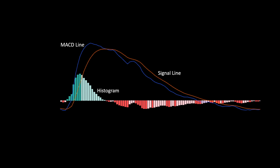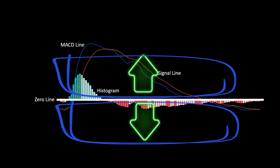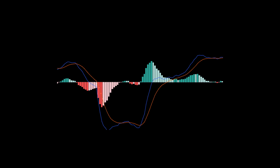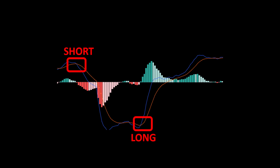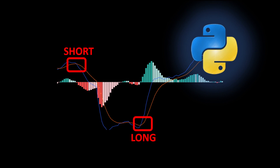The histogram is the difference between the two moving averages — between the MACD line and the signal line. The zero line separates positive and negative values of the histogram. A short signal happens when the fast curve crosses below the slow curve above the zero line, and a long signal is when the fast curve crosses above the slow curve when both curves are below the zero line.